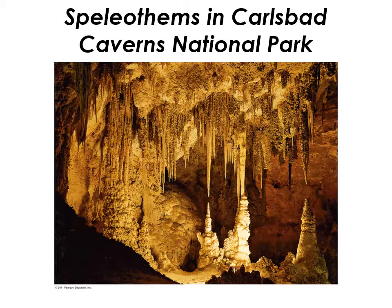Inside caverns, you get really interesting cave formations. Carlsbad Caverns National Park in New Mexico is a famous example. Water drips down from the ceiling with calcite dissolved in it; that calcite comes out of solution forming stalactites hanging from the top, stalagmites on the bottom, and in some places columns where they join. All of these cave formations are called speleothems, and they're all made from calcite.